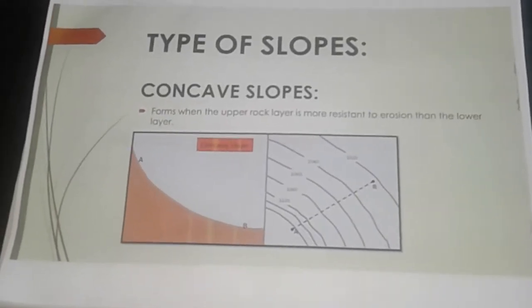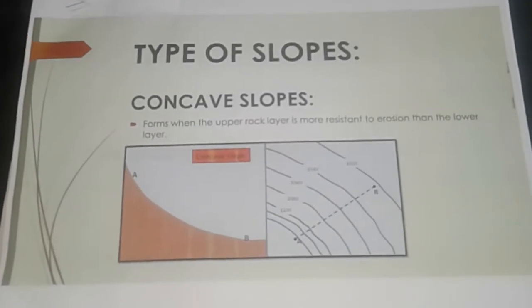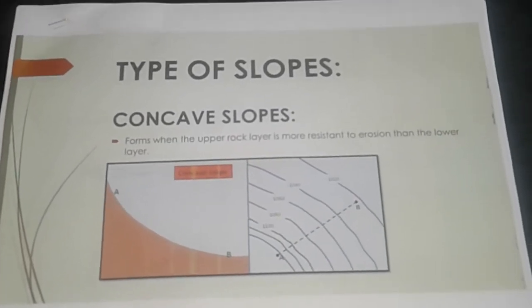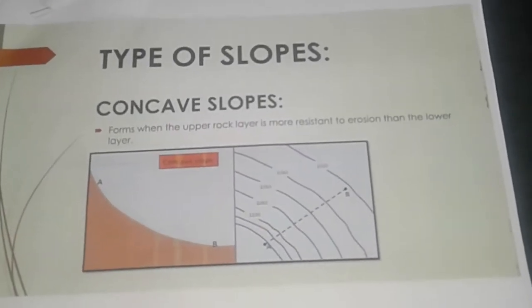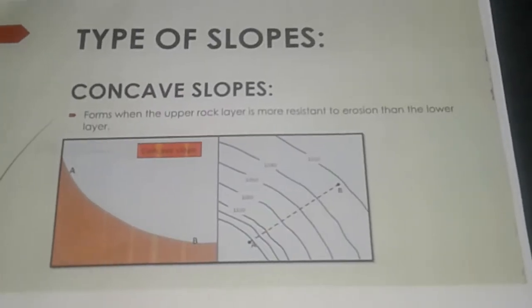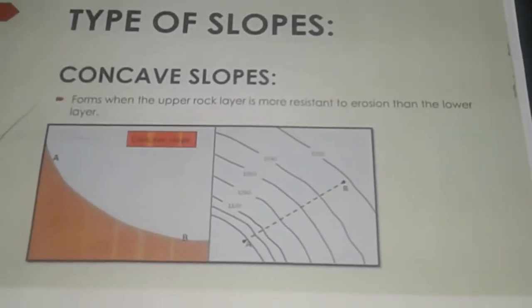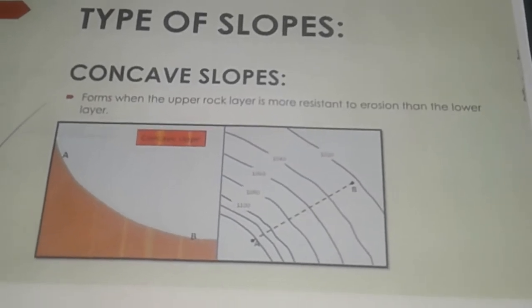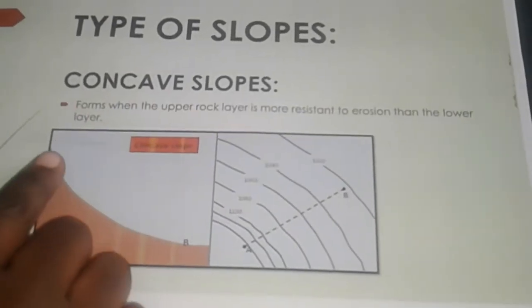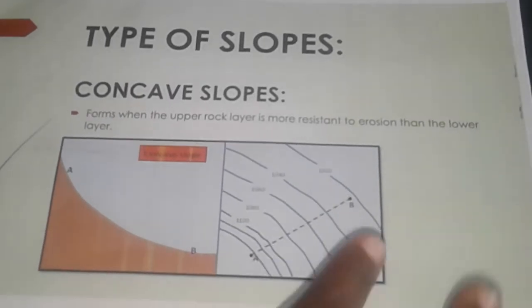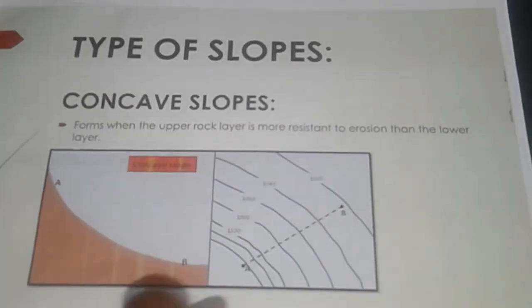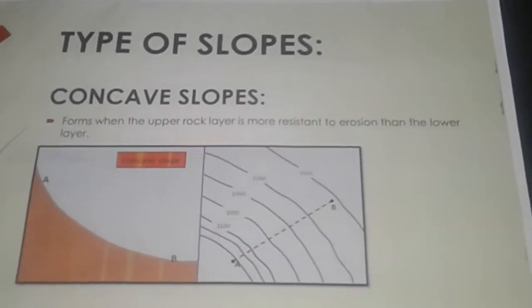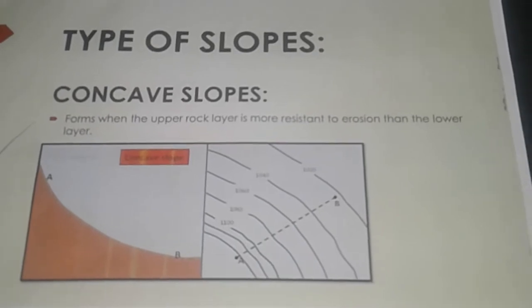A concave slope forms when the upper layer is more resistant to erosion than the lower layer. If the upper layer is more resistant, it means it is steeper, and as you go to the bottom it becomes more gentle. On a contour map, the high ground contour lines are close together and as you go down they become spaced apart — that is an indication of a concave slope.